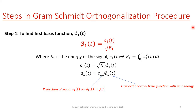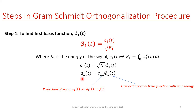Now let's see the steps in the Gram-Schmidt orthogonalization procedure. The first step is to find the first basis function φ1(t), determined using the equation φ1(t) = s1(t) / √E1, where E1 is the energy of signal s1(t), i.e., E1 = ∫₀ᵀ s1²(t) dt. From this we get s1(t) = √E1 · φ1(t). The coefficient √E1 is called s11, which represents the projection of signal s1(t) on φ1(t). Thus s1 is expressed as a linear function of φ1(t).